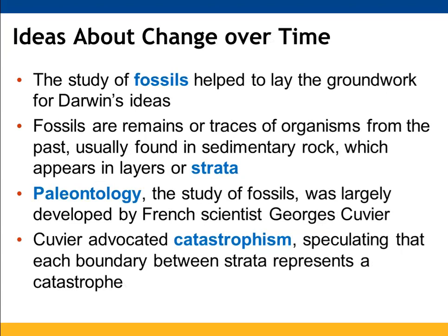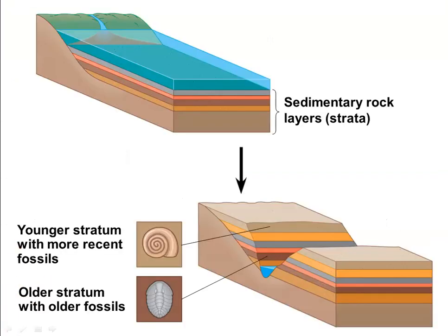Fossils being examined helped to provide a foundation for Darwin's ideas. These are often found in sedimentary rock, which appears in layers or strata. The more recent layers have recent fossils; the older layers have older dating fossils. Paleontology, the study of fossils, was developed in large part by Georges Cuvier. He was an advocate for catastrophism — that the boundaries between each of the strata were due to some sort of catastrophe that had happened on Earth.